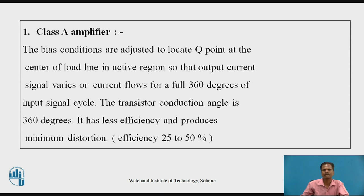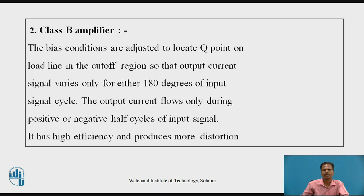The efficiency of a Class A amplifier is in the range of 25 to 50%. The second type is the Class B power amplifier. The power transistor bias conditions are adjusted to locate the Q point on the load line in the cut-off region so that the output current signal varies only for 180 degrees of the input signal cycle. The output current flows only during the positive or negative half cycle of the input signal. It has high efficiency and produces more distortion. Since the transistor conducts only for 180 degrees, the efficiency is relatively higher than Class A, but the discontinuous output current produces relatively more distortion.